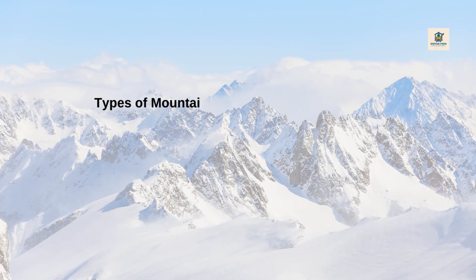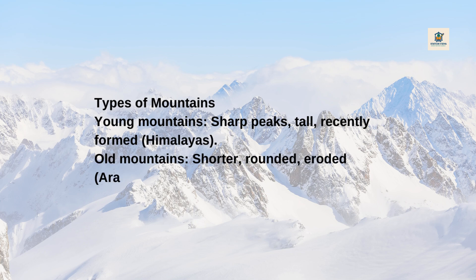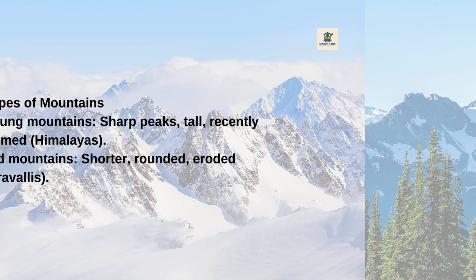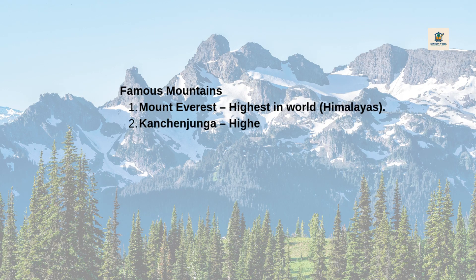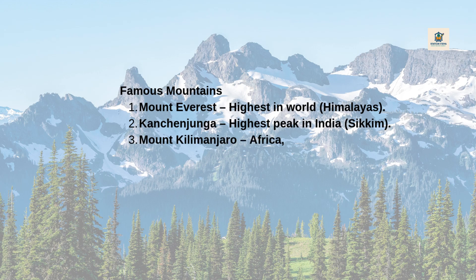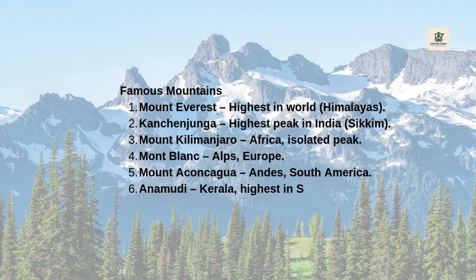Types of mountains: Young mountains have sharp peaks, are tall and recently formed — example, the Himalayas. Old mountains are shorter, rounded, and eroded — example, the Aravallis. Famous mountains include Mount Everest (highest in the world, Himalayas), Kangchenjunga (highest peak in India, Sikkim), Mount Kilimanjaro (Africa, isolated peak), Mont Blanc (Alps, Europe), Mount Aconcagua (Andes, South America), and Anamudi (Kerala, highest in South India).